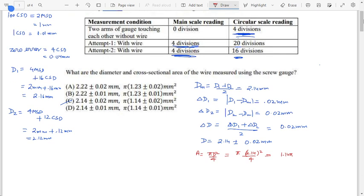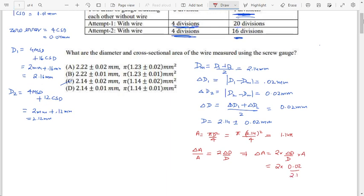Now, how to find the error in the area? So for that, we can say that delta A upon A that will be equals to twice delta D by D. So from here, delta A can be found out very easily. That will be equals to 2 into delta D upon D into area. So from here, this will be 2 into delta D is 0.02. And area was 1.14 pi. So if you solve this, after rounding off to two decimal places, you will get this as 0.02 pi after rounding off to two decimal places.